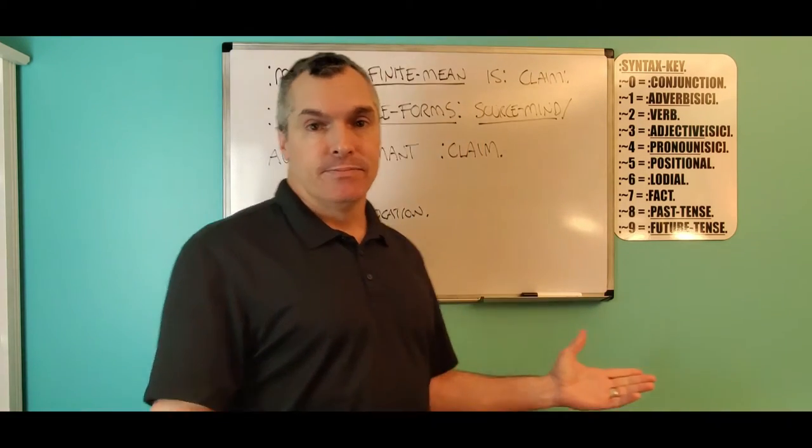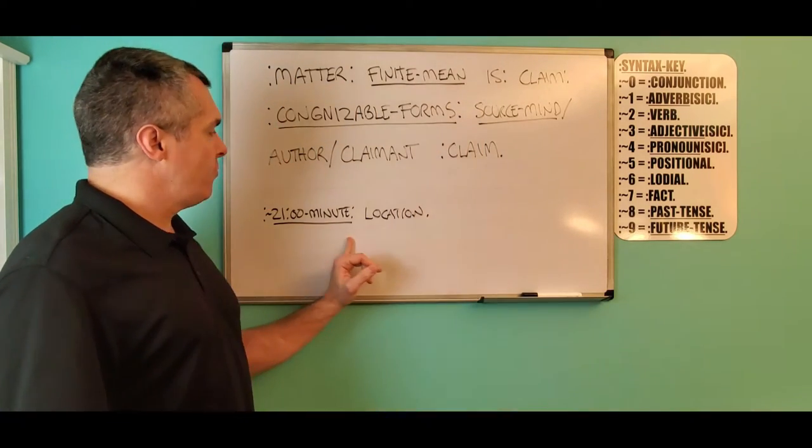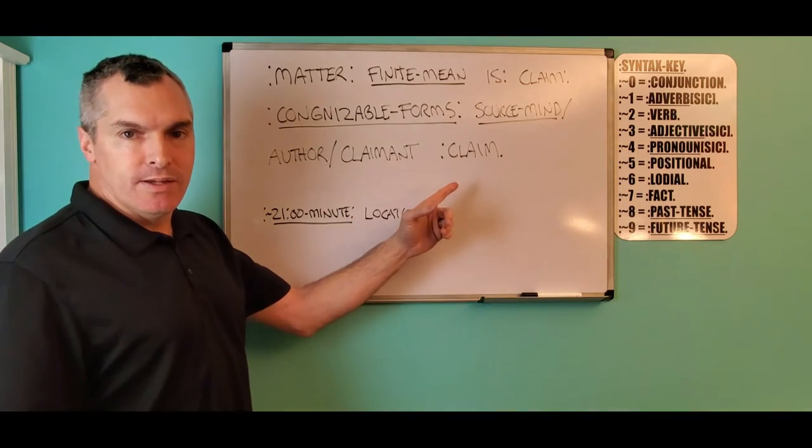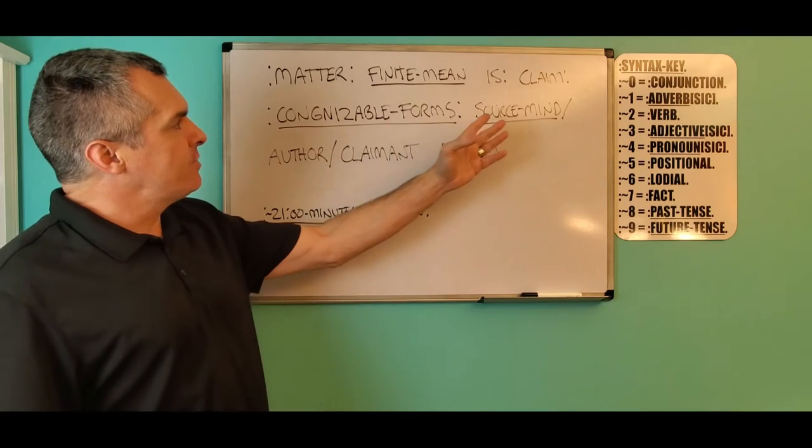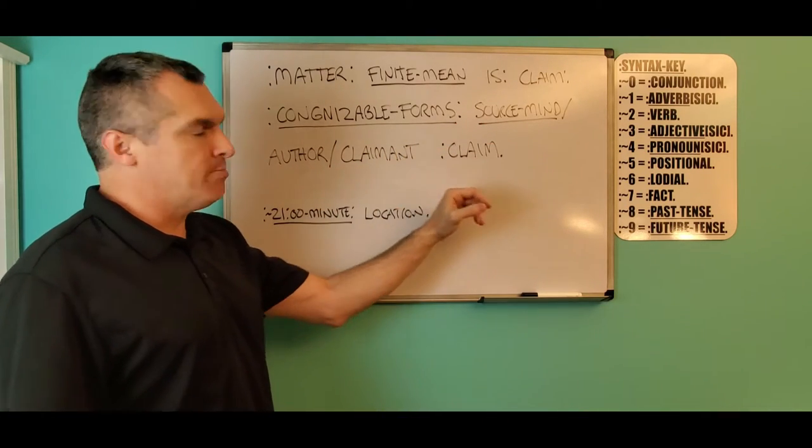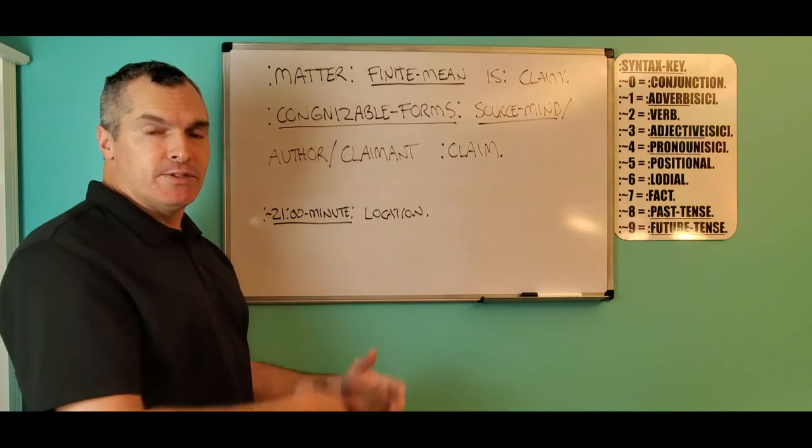So here it is. If you look at about the 21 minute mark, you will see this finite mean in the video. For the matter, the finite mean is with the claim of the cognizable forms with the source mind and author and claimant by the claim. Do you see a mistake here?